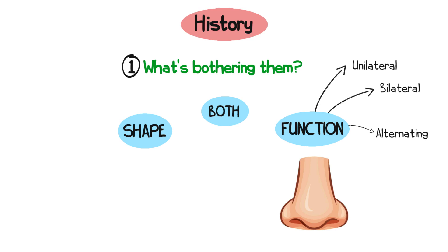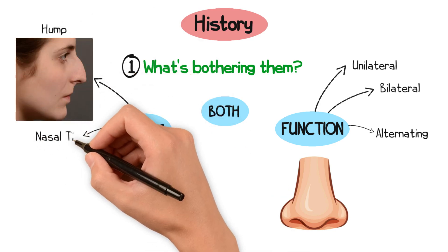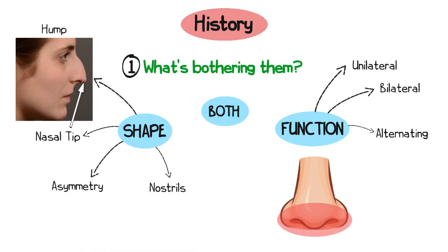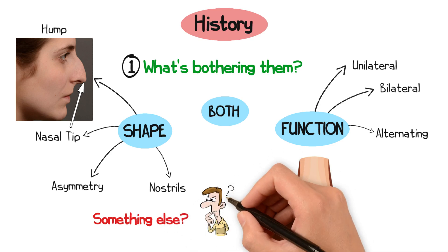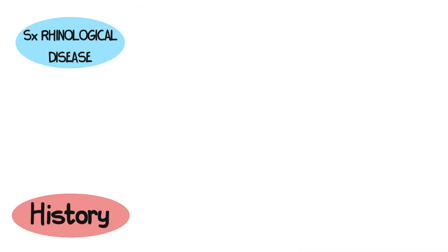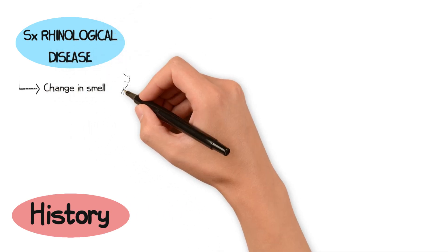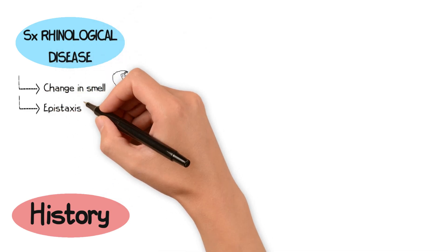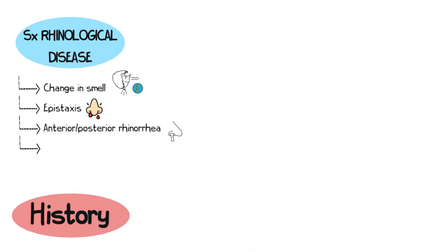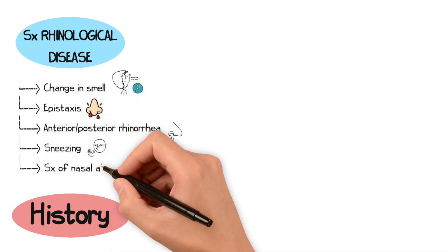When referring to the shape, ask the patient what bothers them specifically. Is it the hump? Is it their nasal tip? Is it the asymmetry of their nose or their nostrils, or something else? In addition, it is important to ask the patient if they have any other symptoms of rhinologic disease, such as a change in their sense of smell, any nosebleeds, any anterior or posterior rhinorrhea, sneezing, and symptoms of nasal allergy.